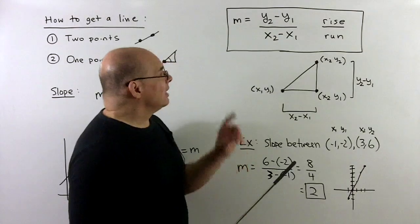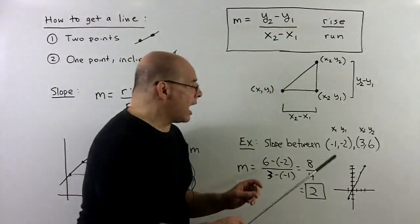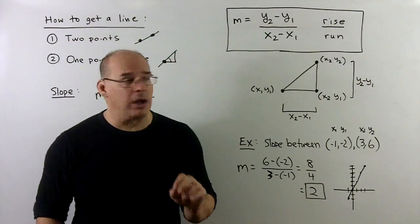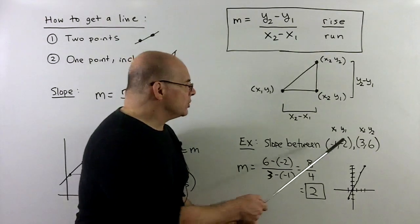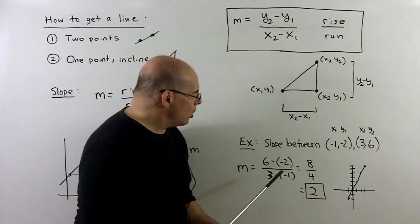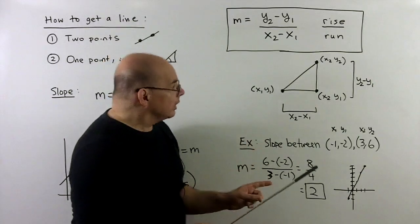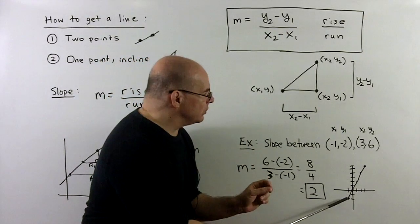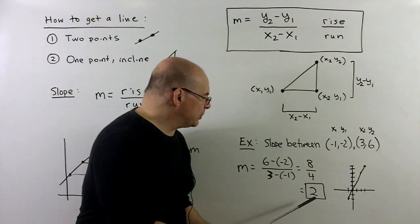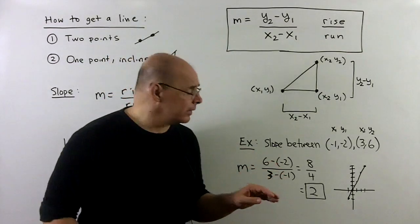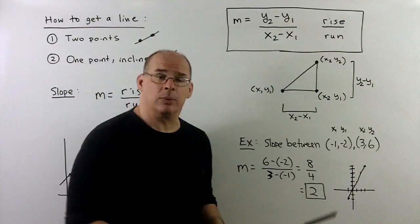Example: find the slope of the line through (-1, -2) and (3, 6). Label x1, y1, x2, y2 and drop into the formula — use parentheses for negatives. Rise is 6 minus (-2) and run is 3 minus (-1), giving 8 over 4, which is 2. The positive slope means the line goes up and to the right. The sign tells you the direction; the number tells you how steep or flat.